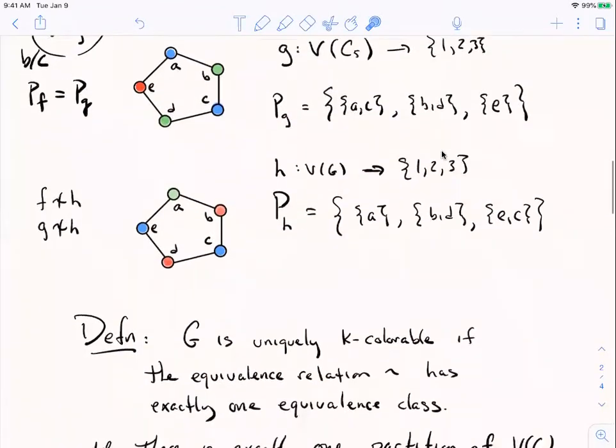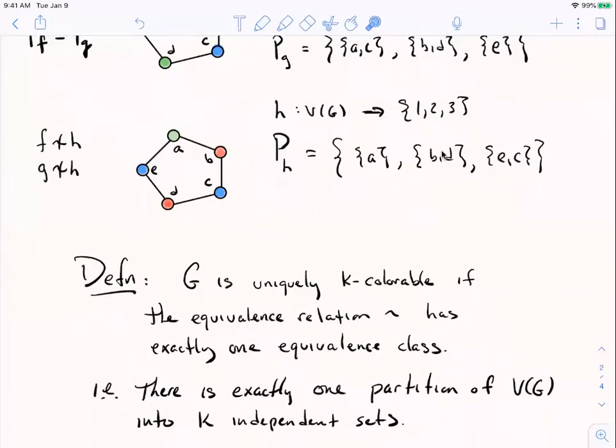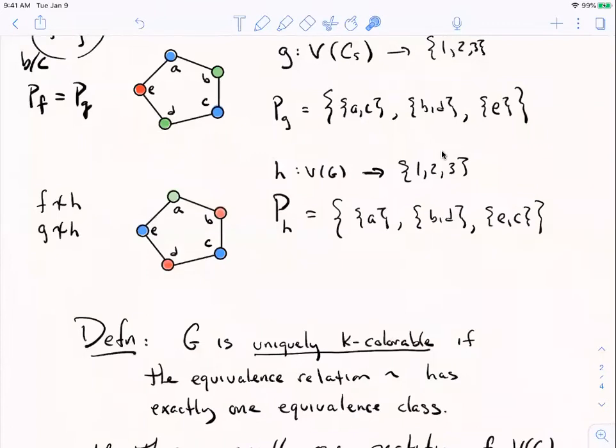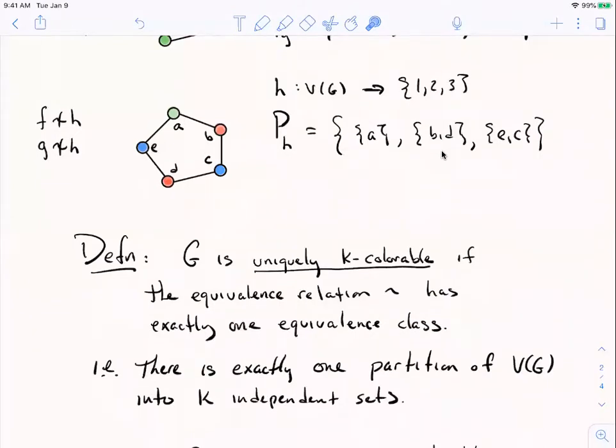So here's kind of the main definition. I'm going to call a graph G uniquely k-colorable if that equivalence relation has one equivalence class. So in other words, any two colorings of the graph are equivalent. It's uniquely k-colorable. C5 is not uniquely k-colorable because we are right now on this screen looking at two non-equivalent colorings of it. Another way to say this is that there's just one partition of the vertex set into independent sets where you want k of them because the independent sets are the sets that receive the same color.